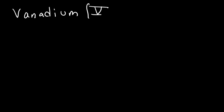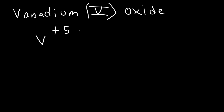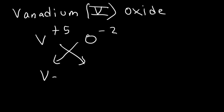Vanadium(V) oxide: vanadium has a positive five charge and oxygen has a negative two charge. Using this method, the formula is V2O5 — that's vanadium(V) oxide.